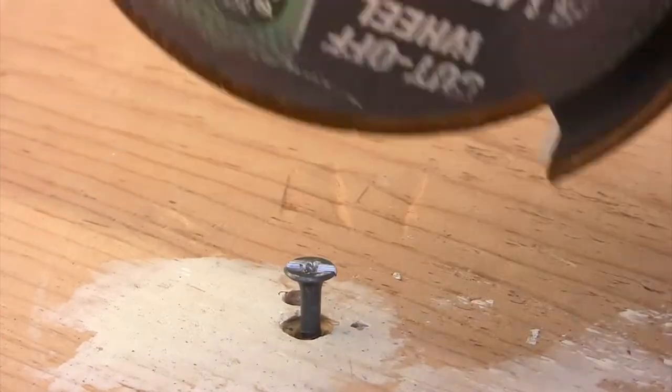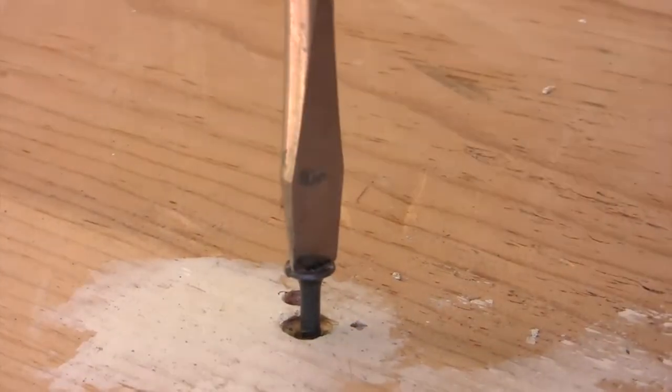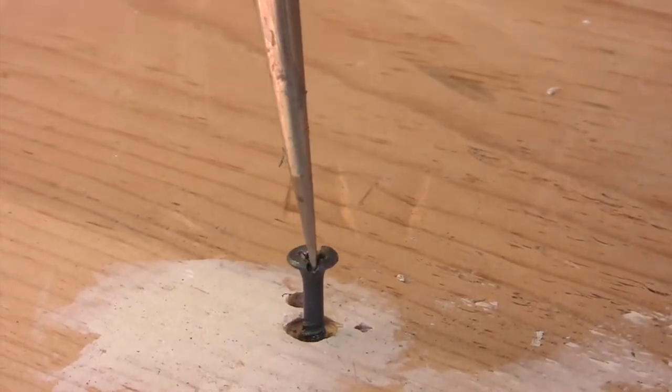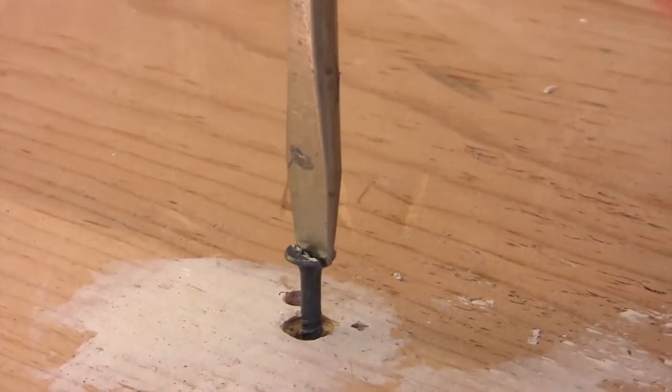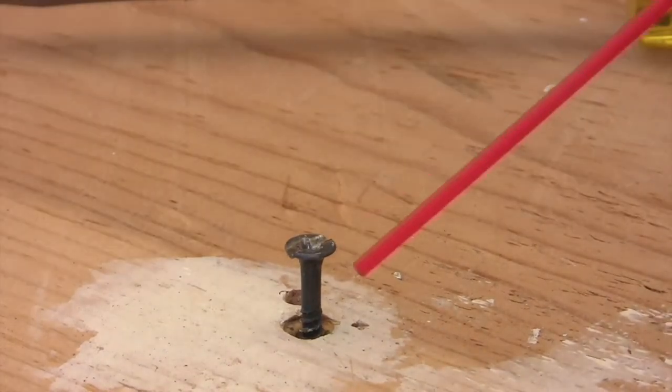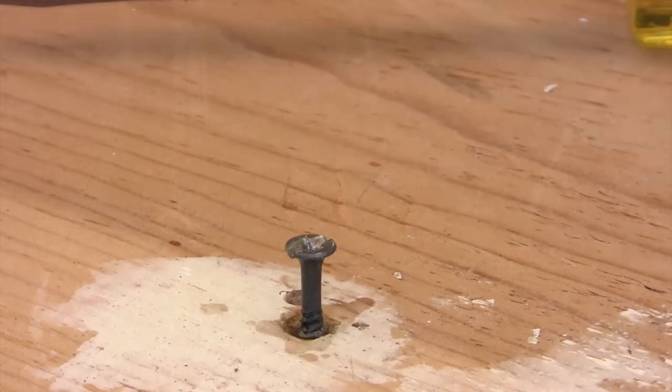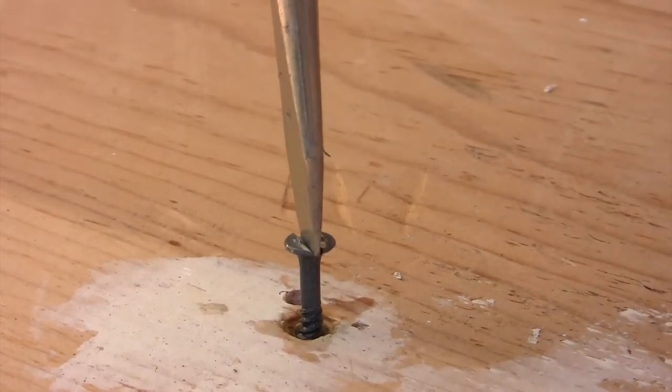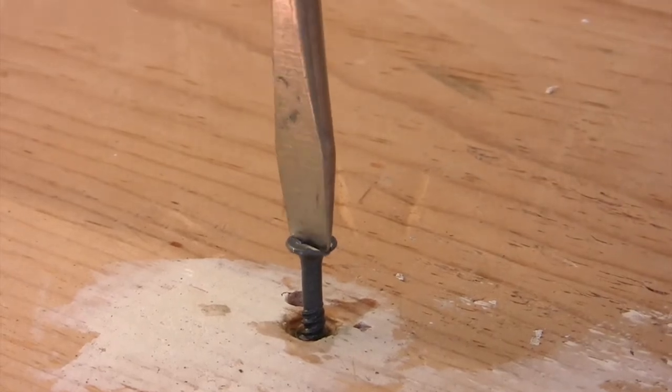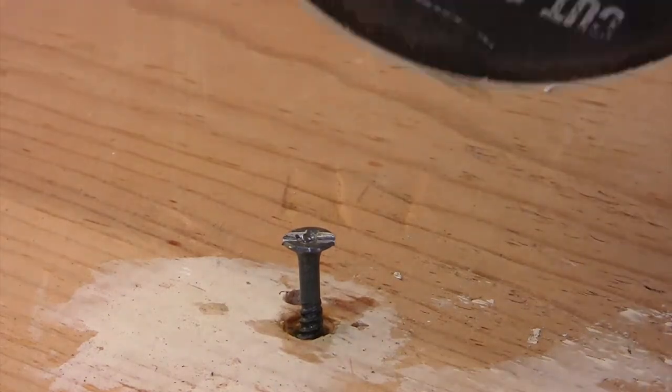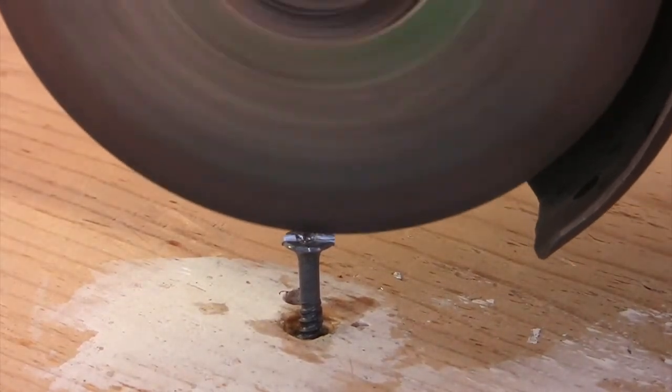This one I did not cut deep enough, so it keeps slipping away. I try to use WD-40 to lubricate between the screw and the wood. Not working well, so I need to cut a little deeper.